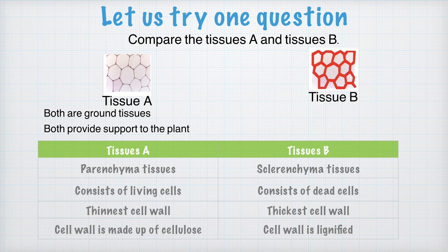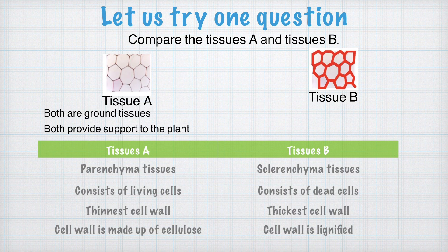Now let us try one question. Compare tissue A and tissue B. Looking at the picture, we can see that the cell wall of tissue A is very thin, while tissue B is thick and even. We can identify that tissue A is parenchyma tissue, whereas tissue B is sclerenchyma tissue — because colenchyma tissue has an uneven cell wall.